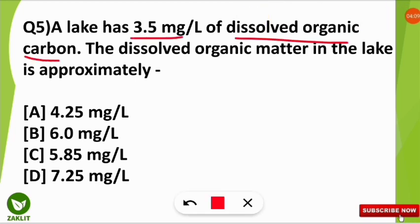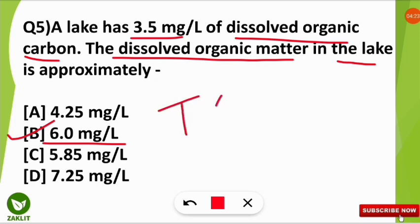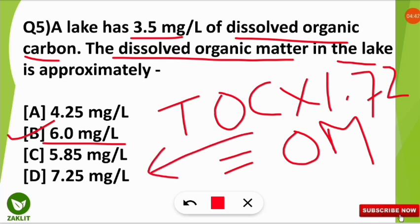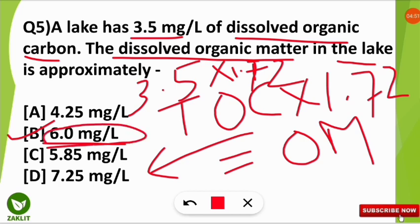Next question: a lake has 3.5 mg/L of dissolved organic carbon; find the dissolved organic matter. The correct option is 6 mg/L. The formula is: Total Organic Matter = Total Organic Carbon × 1.72. So, 3.5 × 1.72 = 6.02 mg/L, which is approximately 6 mg/L of dissolved organic matter.